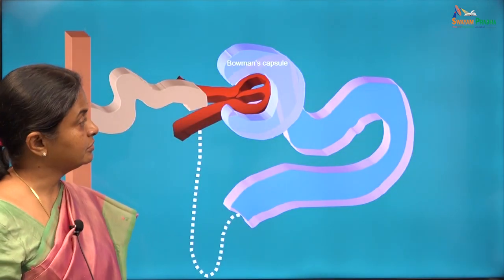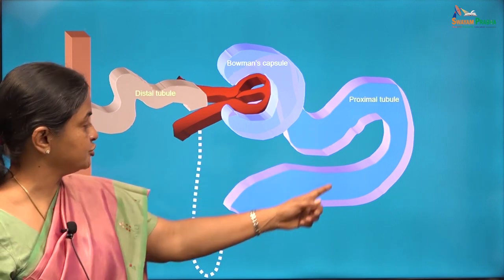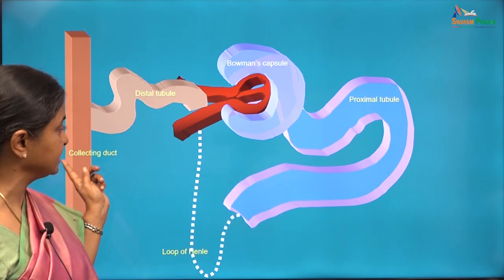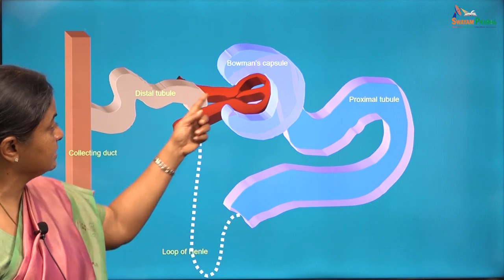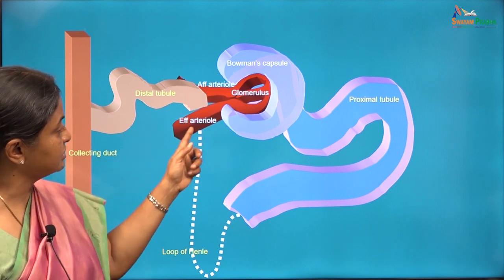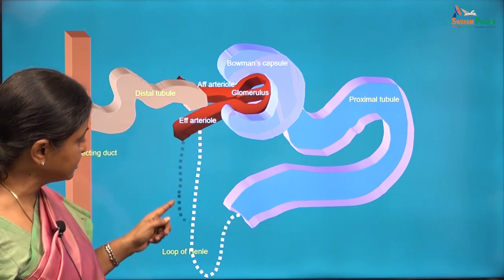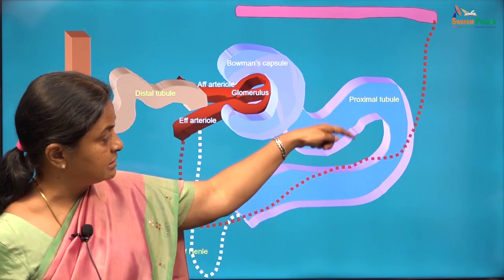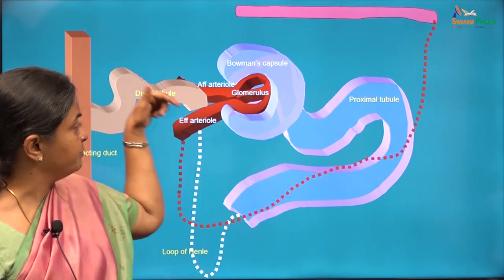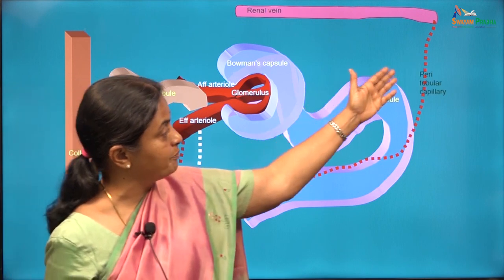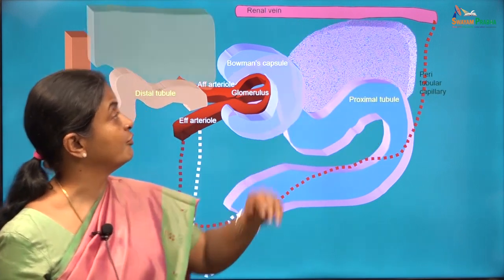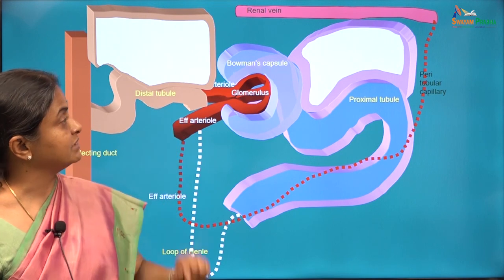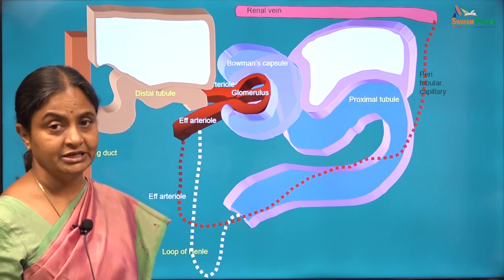Parts of the nephron: Bowman's capsule, proximal tubule, loop of Henle, distal tubule, collecting duct. Afferent arteriole, glomerulus. The efferent arteriole continues and winds around the PCT and DCT to form what are called peritubular capillaries before ending in the renal vein. We then have the proximal and distal tubular cells.